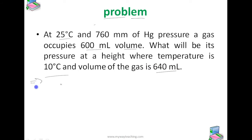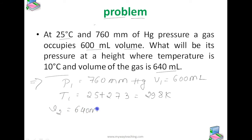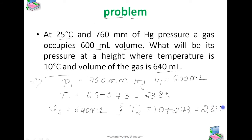The given values are: P1 is equal to 760 millimeters Hg, V1 is equal to 600 milliliters, T1 is equal to 25 plus 273, converting from degrees Celsius to Kelvin, that is 298 Kelvin. V2 is equal to 640 milliliters and T2 is equal to 10 plus 273, which is 283 Kelvin. According to the combined gas law we know that...